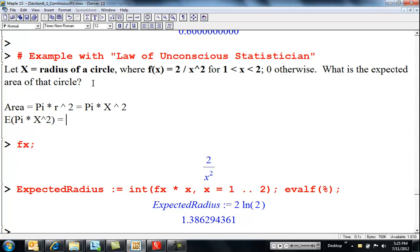But I learned in the expected value chapter, I'm allowed to bring out a constant. So, this is pi times expected value of x squared. And I can find x squared with the law of the unconscious statistician.